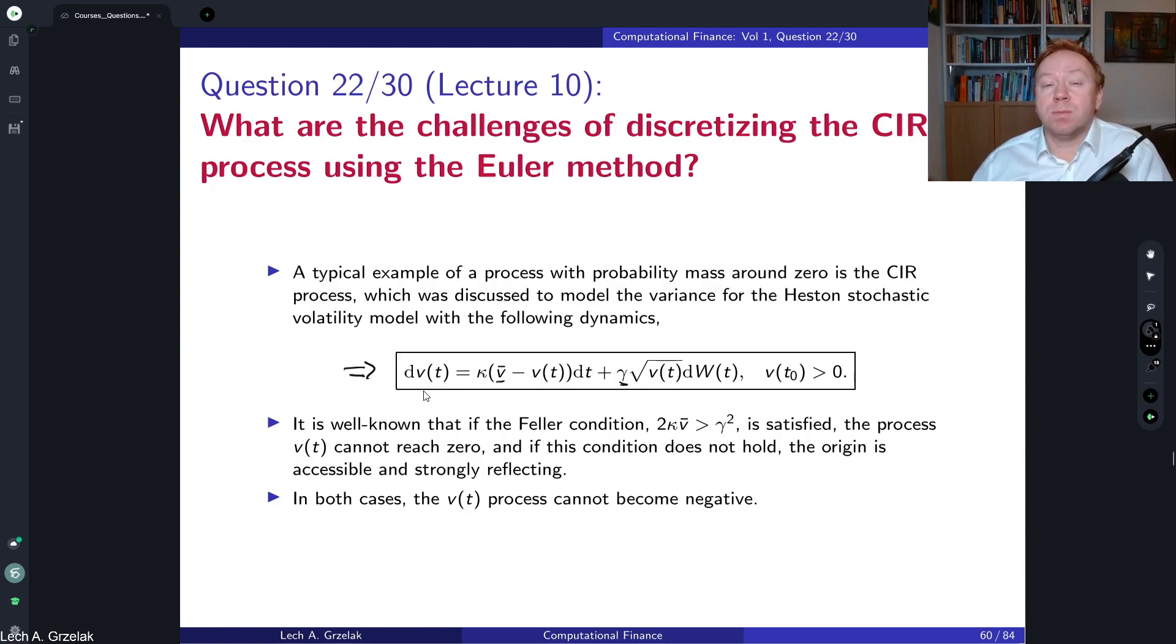If we have fatter tails, this means typically that we can calibrate better to the market, because then the extreme events are more likely to happen compared to the standard log-normal or normal distributions.